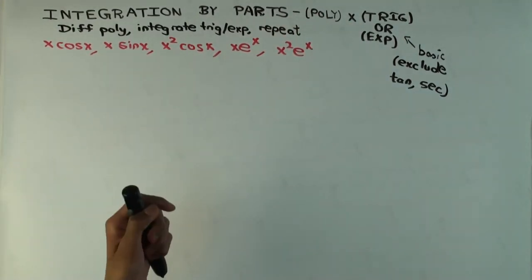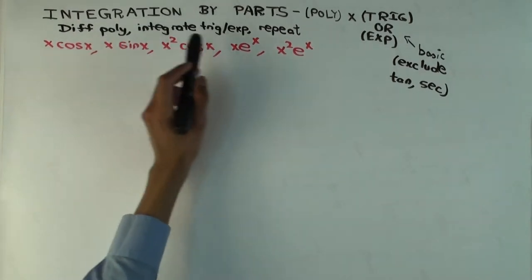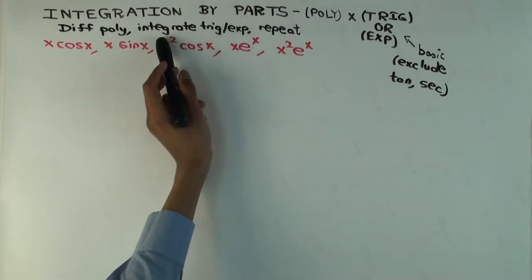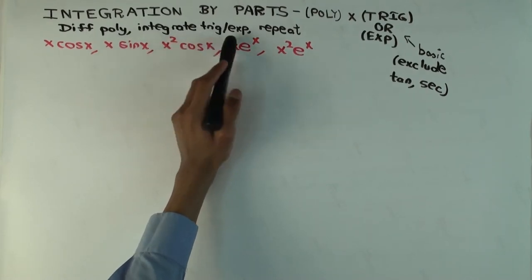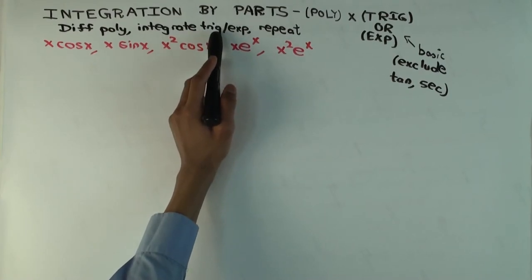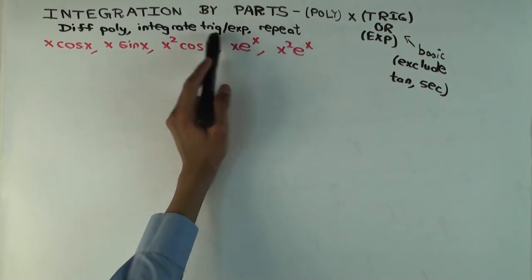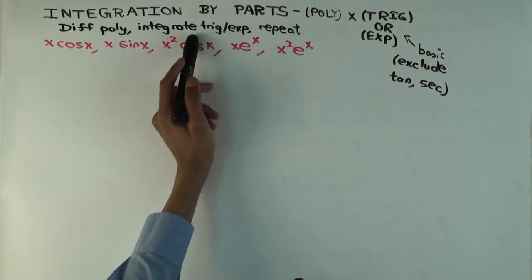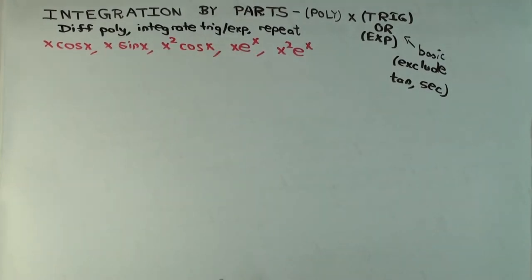The general strategy is: the polynomial part you differentiate, and the trig or exponential part you integrate. That's how you decide which part to differentiate and which to integrate. You usually have to apply integration by parts multiple times — keep repeating until the polynomial differentiates to a constant, then do the final integration.